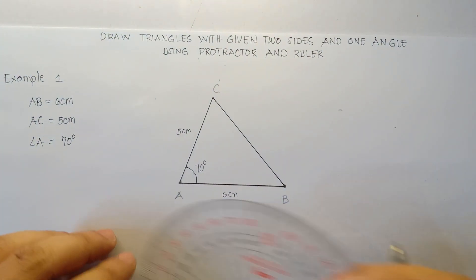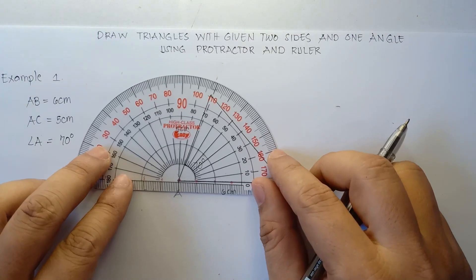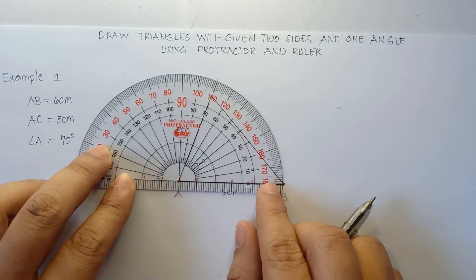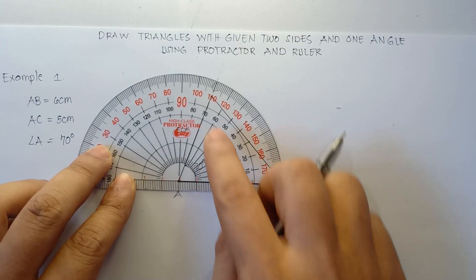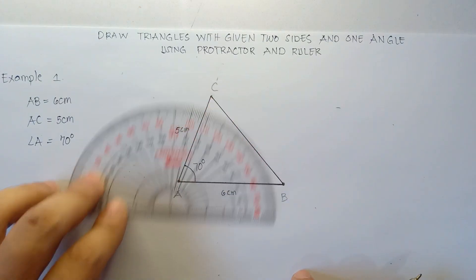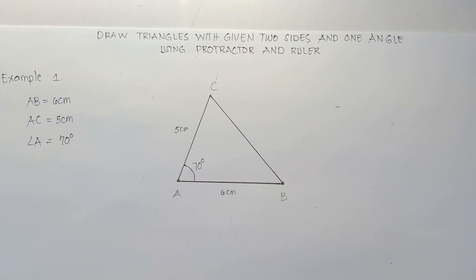You can use your protractor to check — align the center part, then align zero in the horizontal line, and that would be 70 degrees. All set for example number one. That's how you draw given two sides and then one angle.